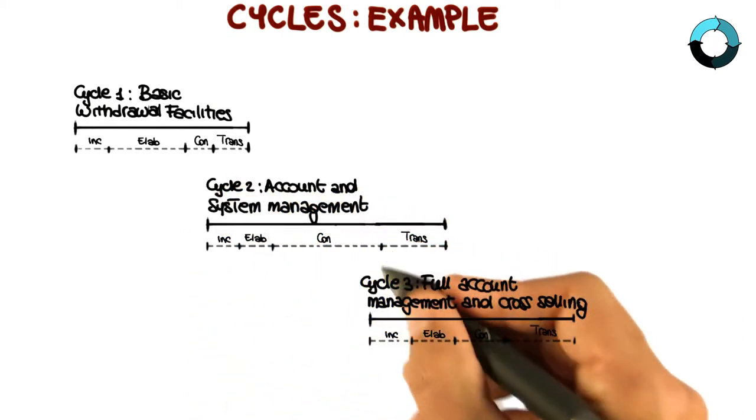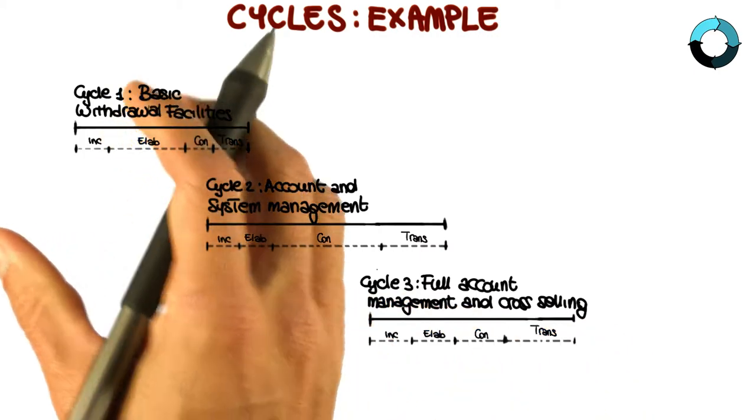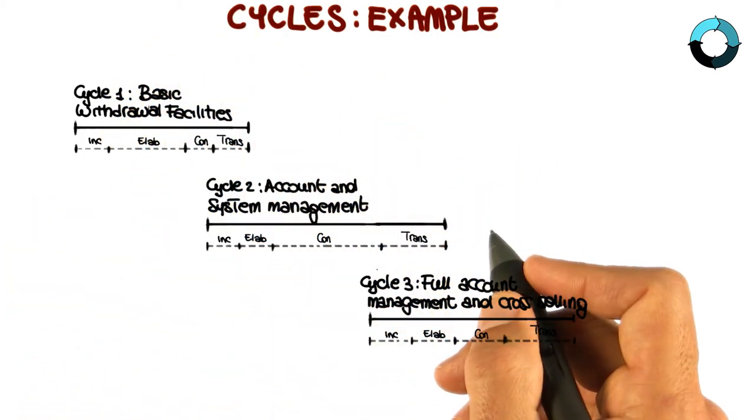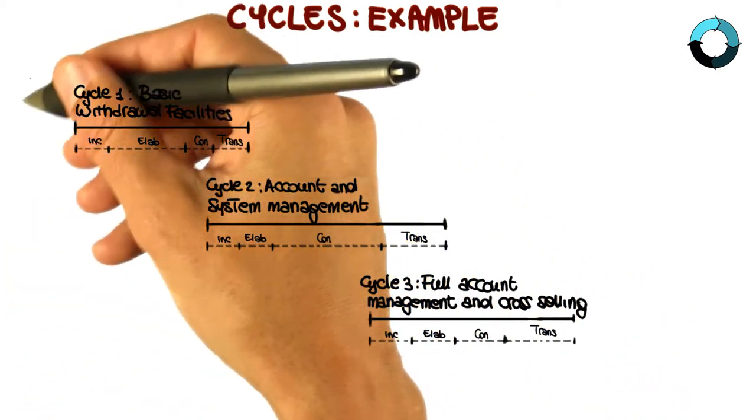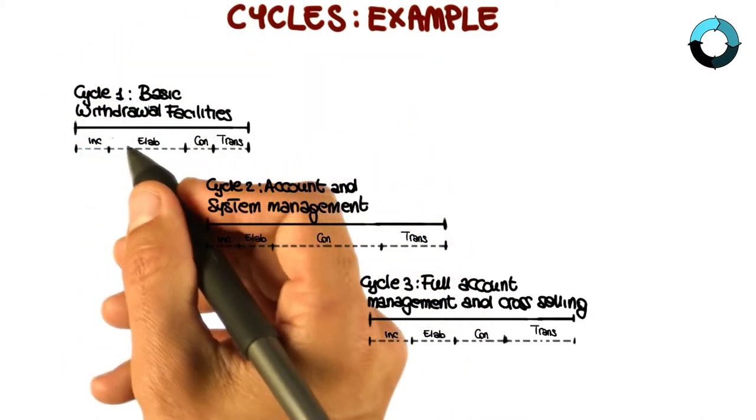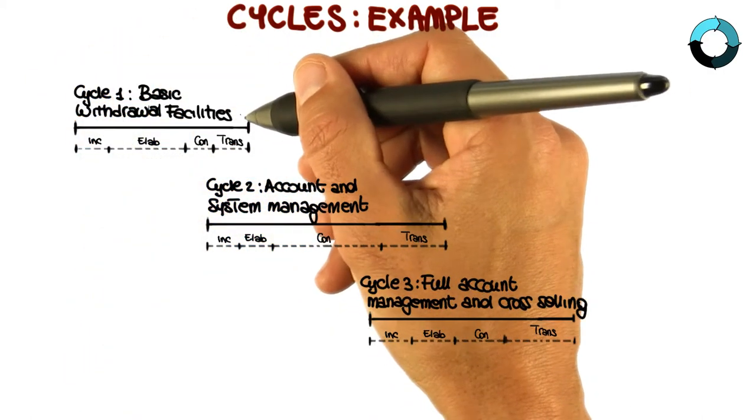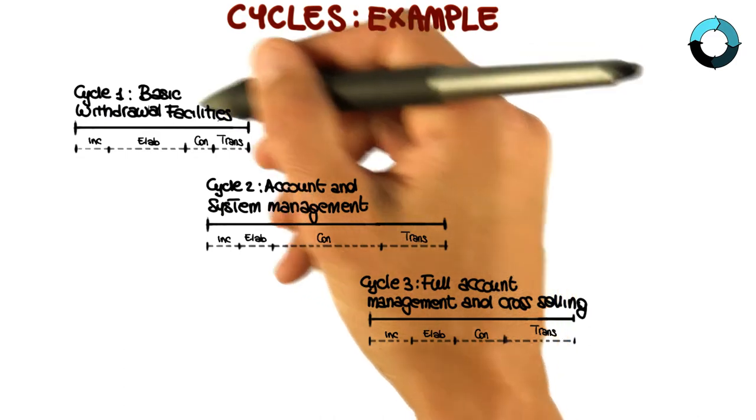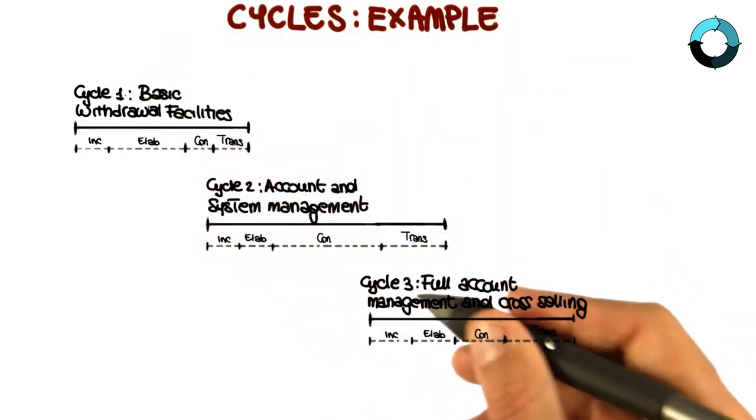The first one is that each cycle focuses on a different part of the system. So when you use the rational unified process, you will select a subset of use cases that you want to realize within your cycle. And the final product for that cycle will be a product that realizes those use cases. This is the first aspect.